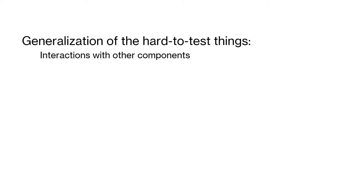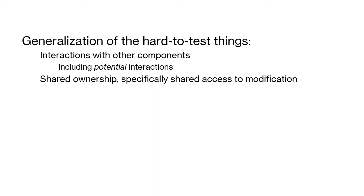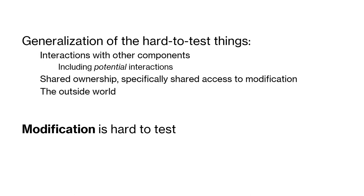So here's our generalization of these hard-to-test things: interactions generally, including potential interactions; shared ownership, specifically shared modification; and the outside world in general, because relying on it is unreliable. Most generally, modification is hard to test. So our code quality guideline from this point forward will be to avoid modification as much as possible, or at least isolate it in discrete manageable chunks.